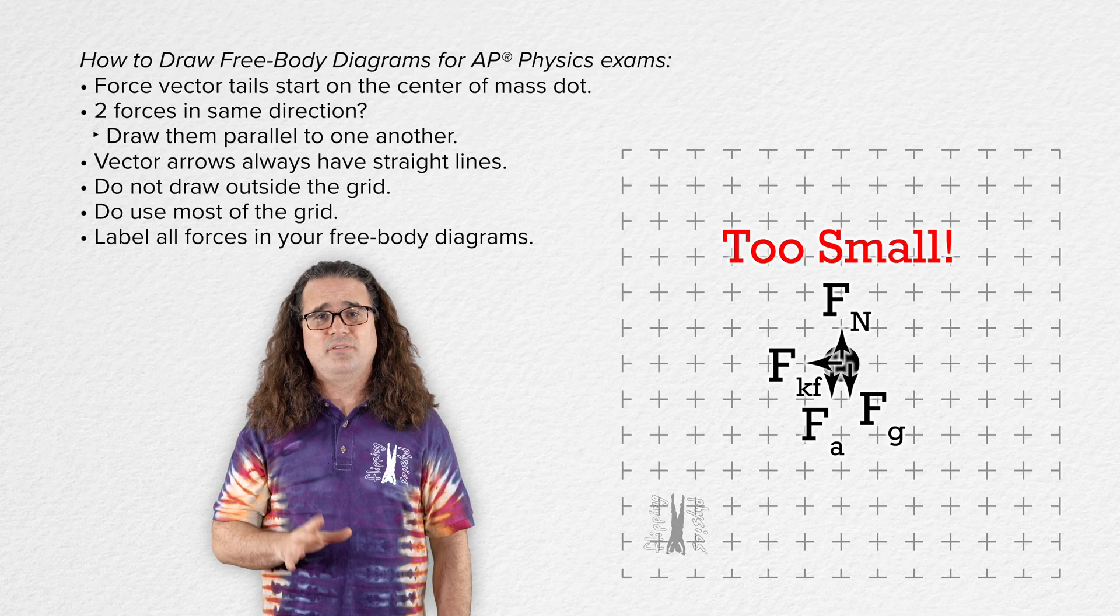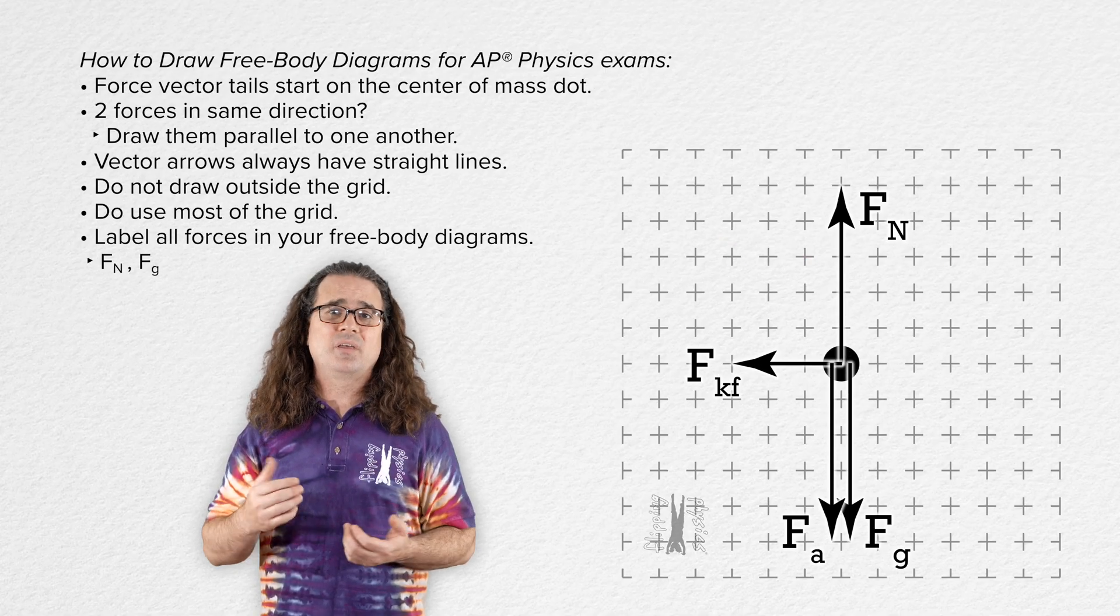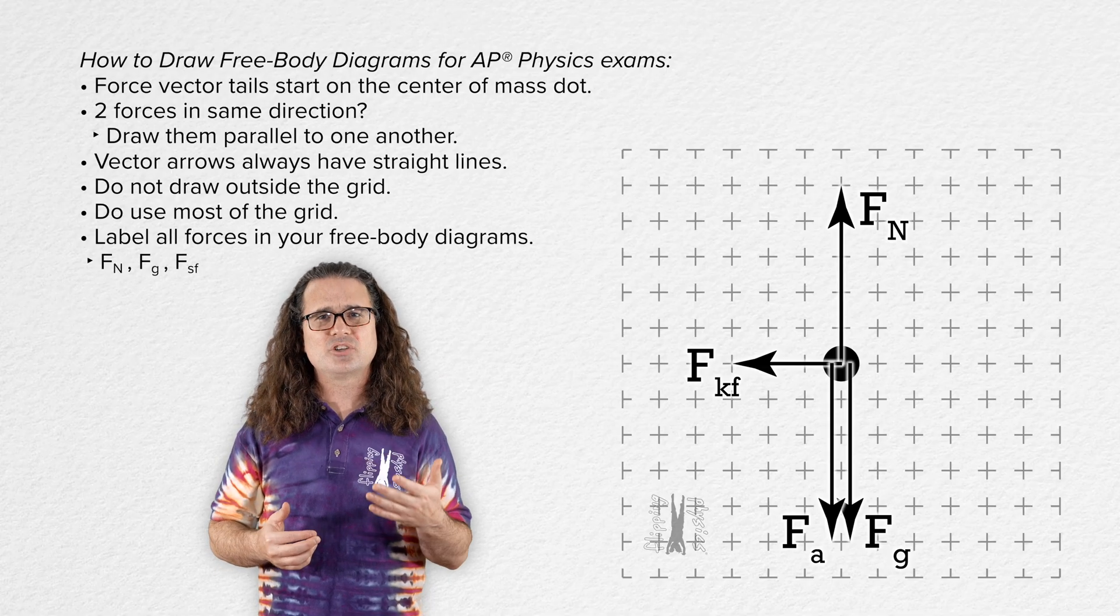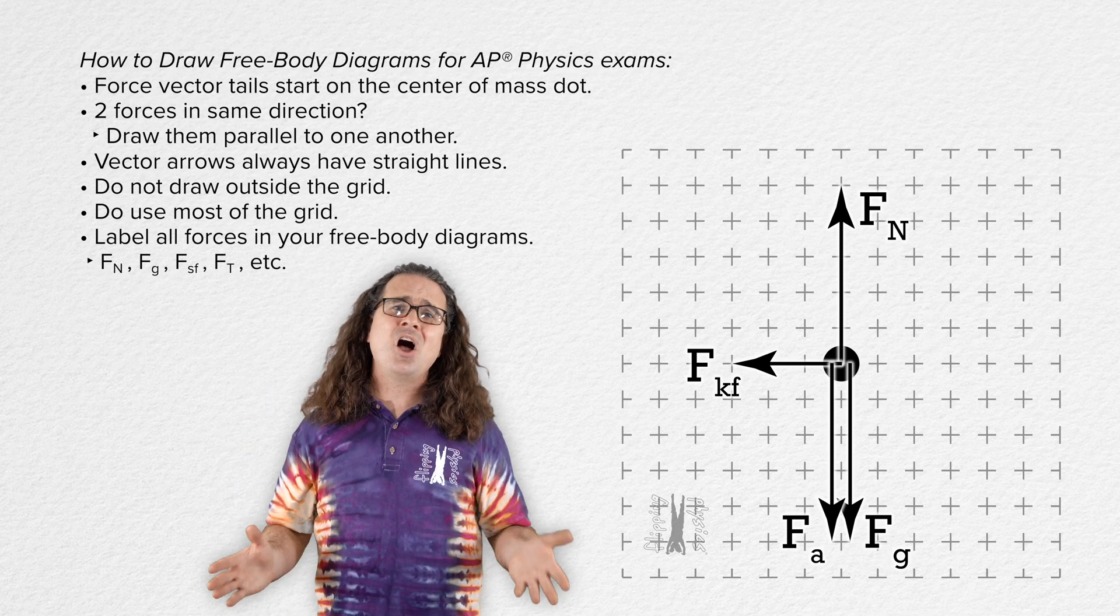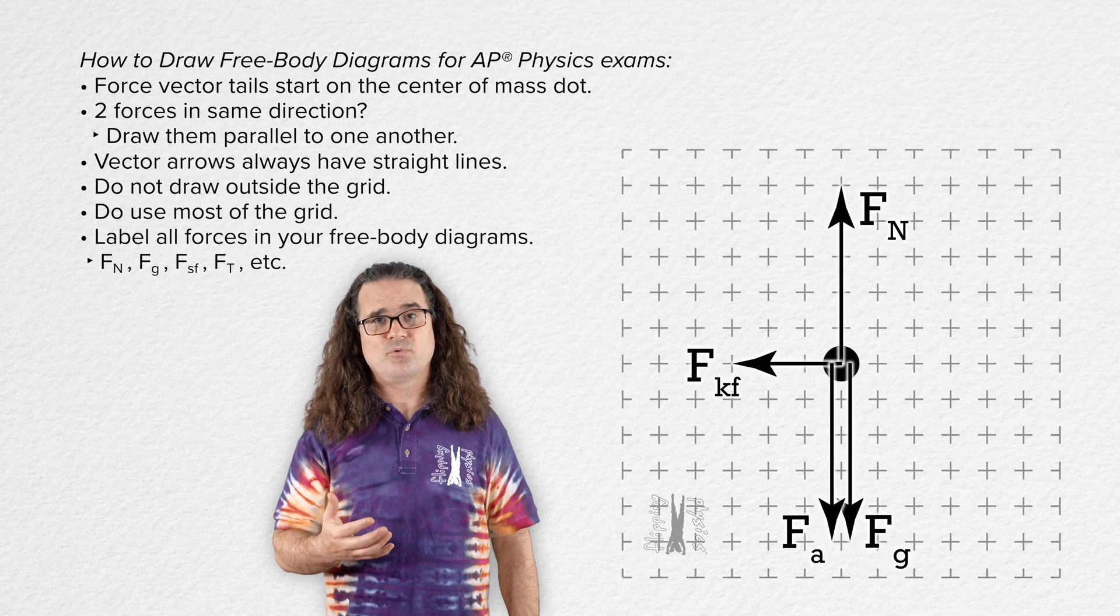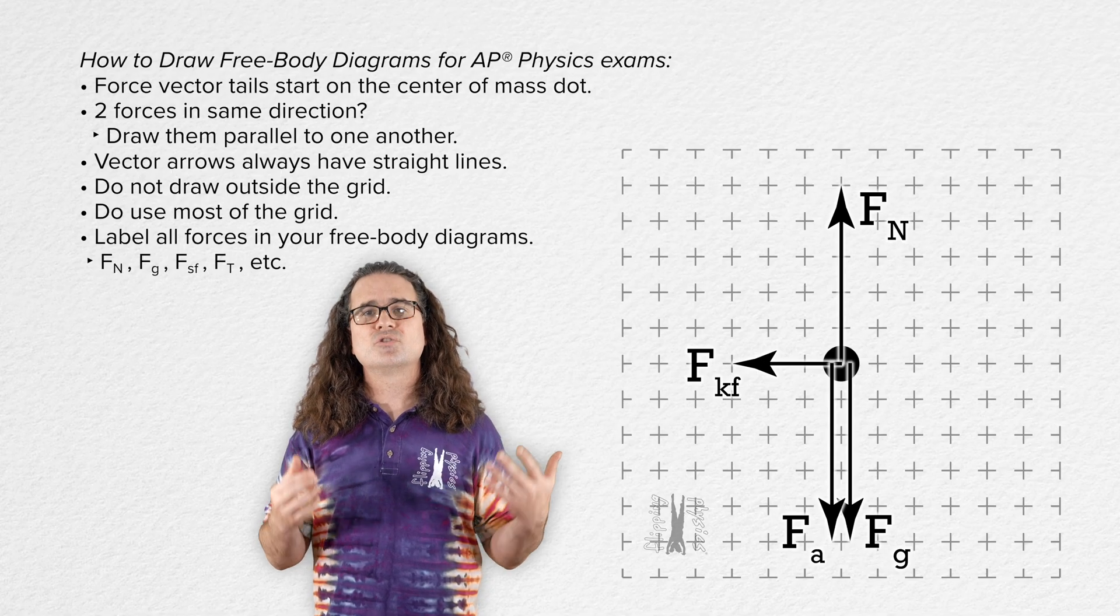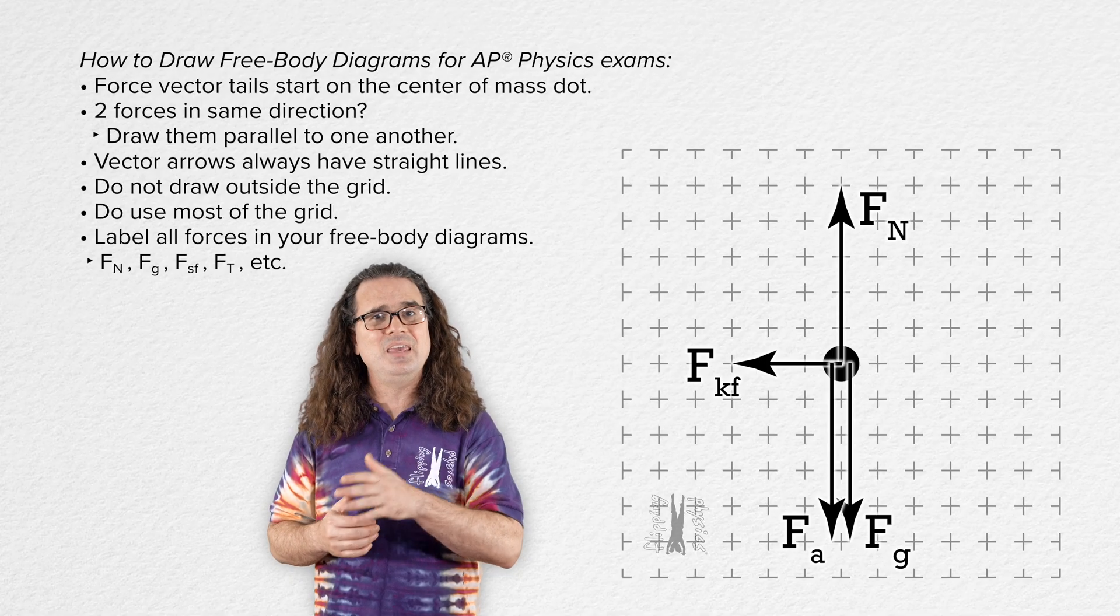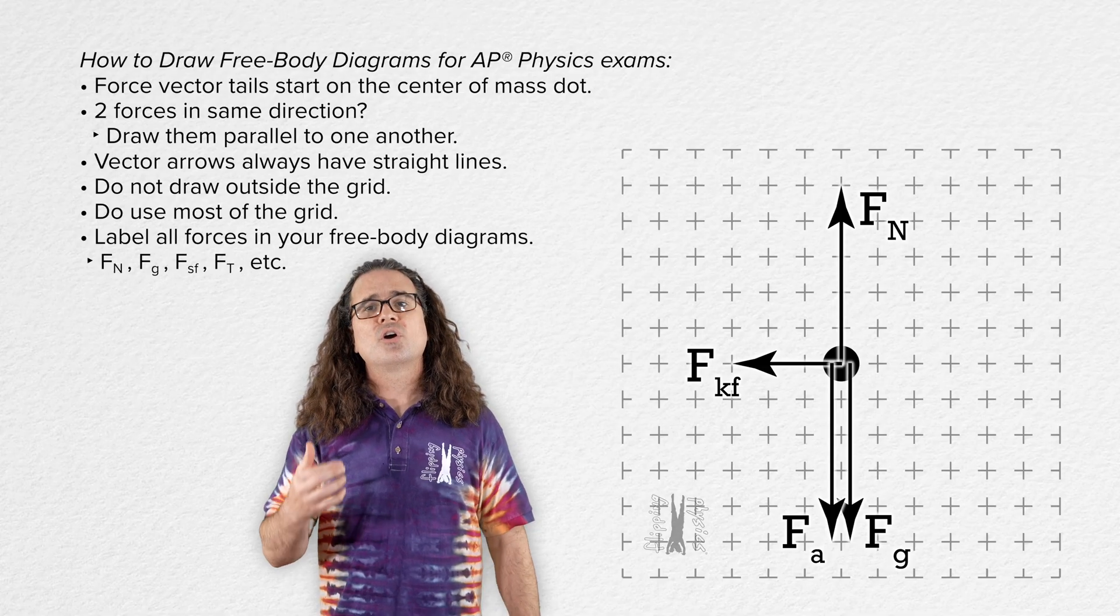Okay. Label all of the force vectors in your free body diagrams. I prefer F with an uppercase N subscript for force normal, F with a lowercase g subscript for force of gravity, F with a lowercase s for force of static friction, F with an uppercase T for force of tension, and so forth. However, as long as it is clear what you mean, you should be fine. For example, for normal force, you could also just write capital N or F with a lowercase n subscript or even the words normal force. For force of gravity, you could also write F with a subscript of GRAV, or capital W, or mg, the words gravitational force, or the word weight.